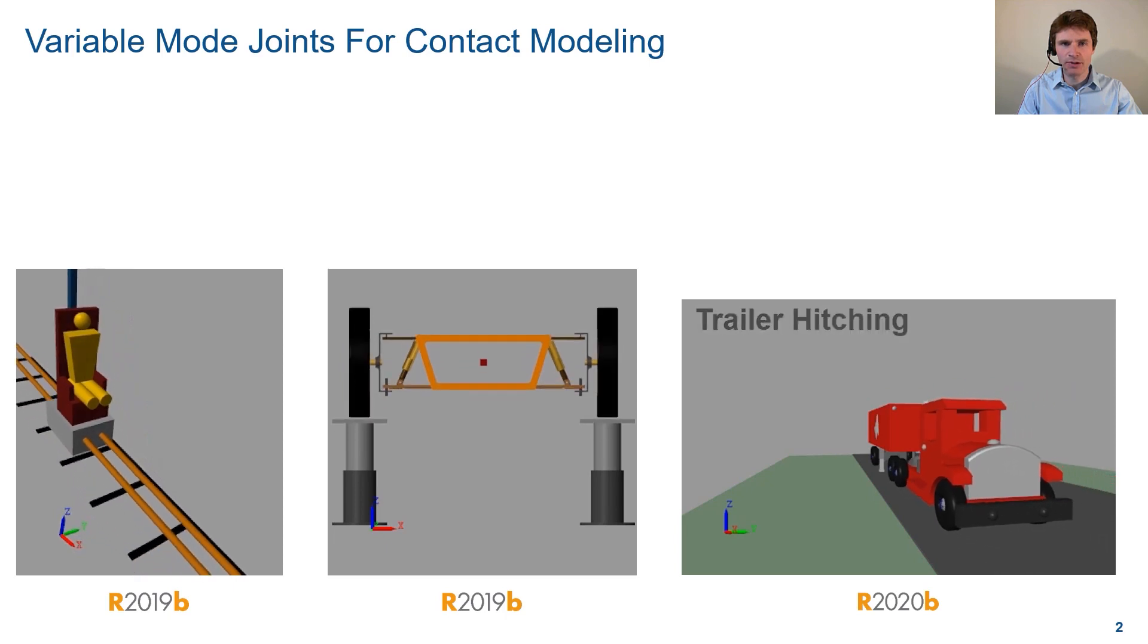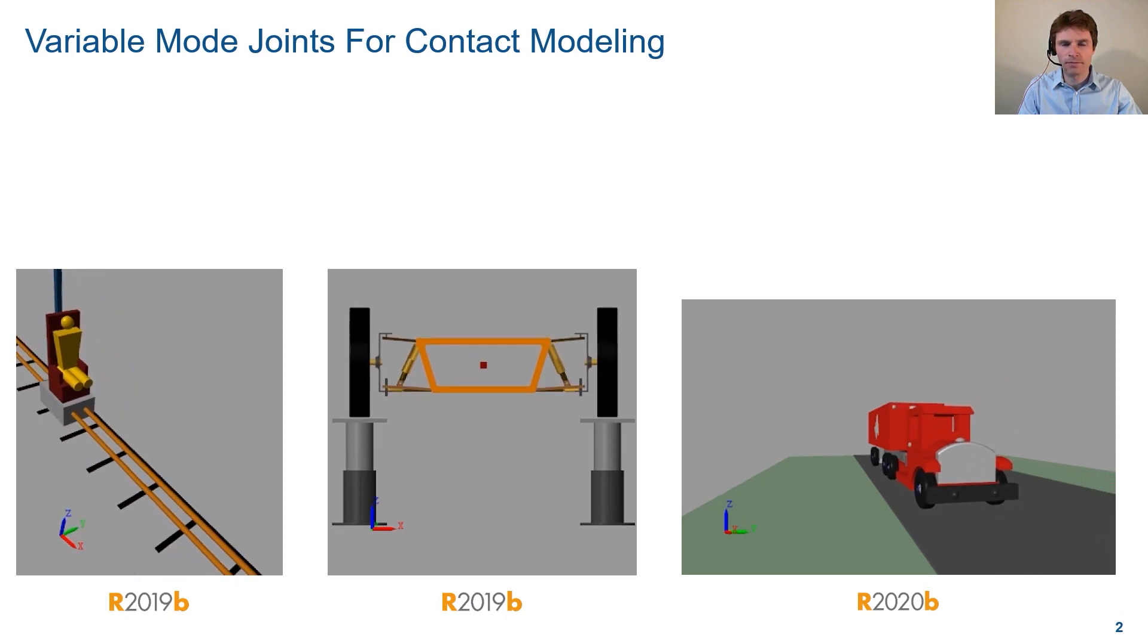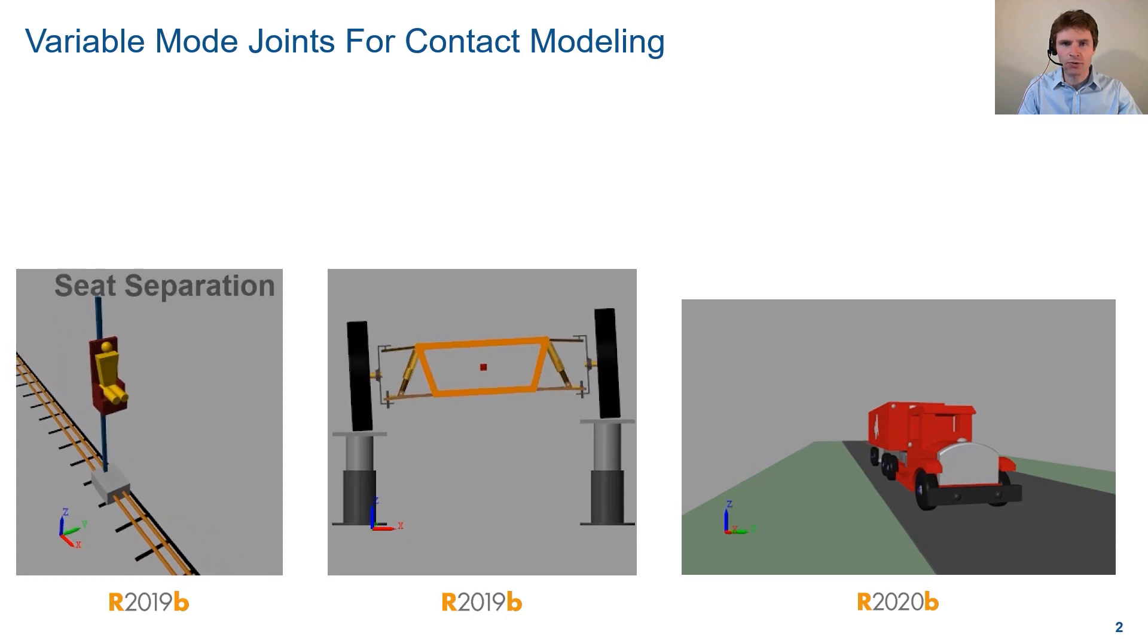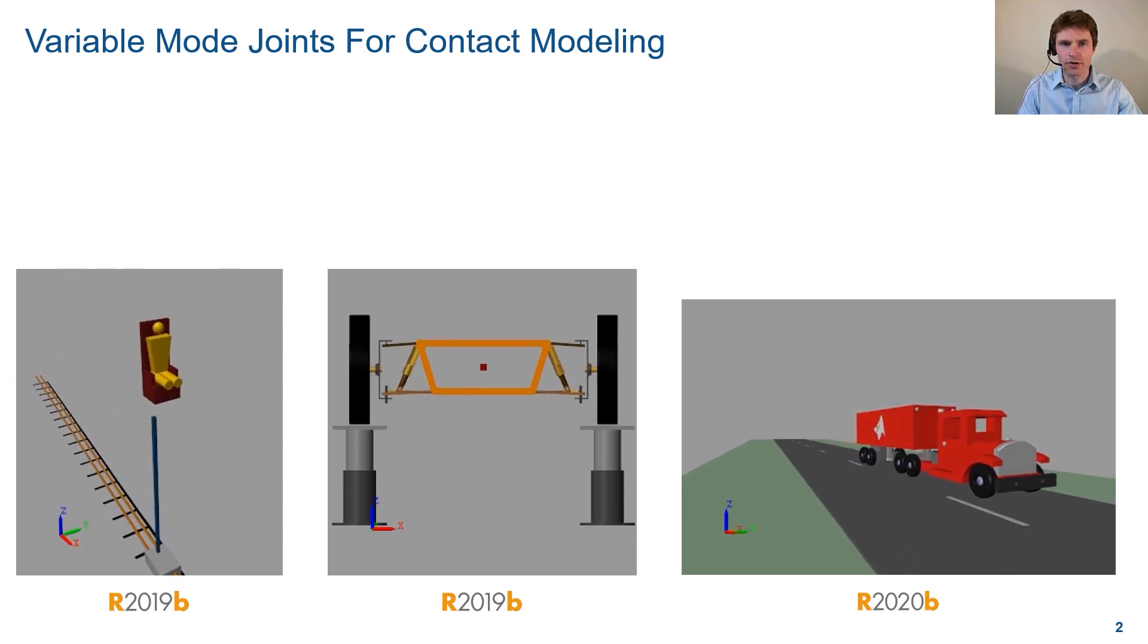Joints in Simscape Multibody currently support two modes: normal and disengaged modes. Variable mode joints are those which can change between the two modes during simulation.